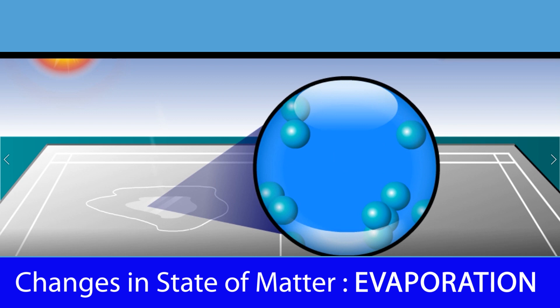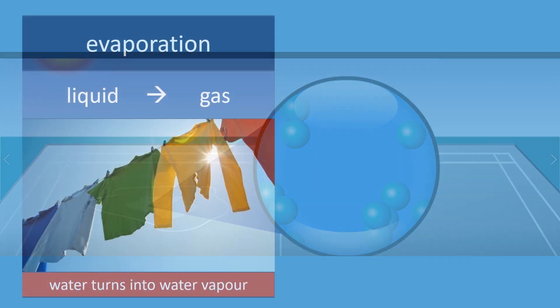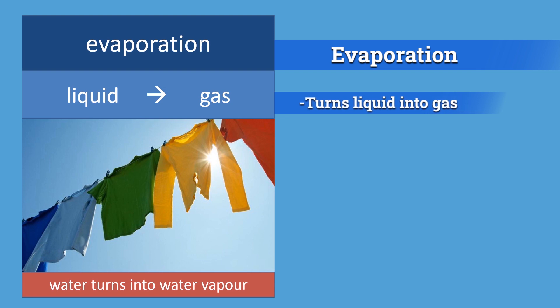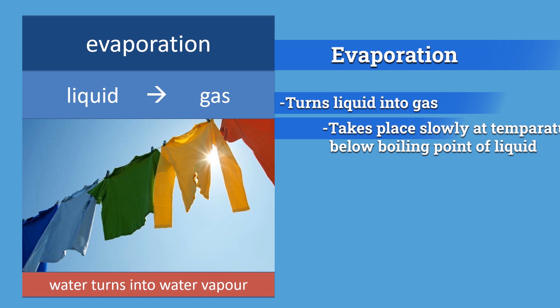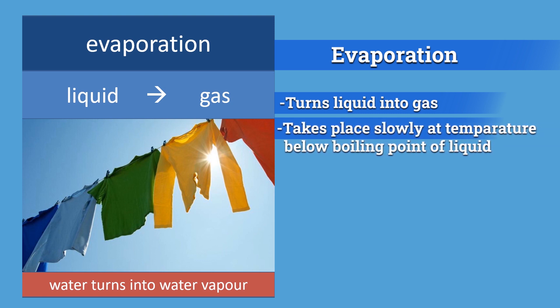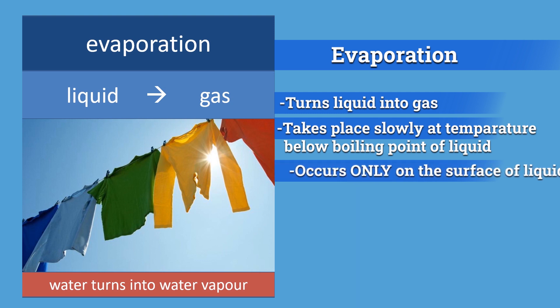Water evaporates slowly and turns into steam, so liquid turns into gas during evaporation. Both boiling and evaporation turn liquid into gas. However, evaporation is different from boiling because evaporation takes place slowly at any temperature below the boiling point of the liquid, and it occurs only on the surface of the liquid.